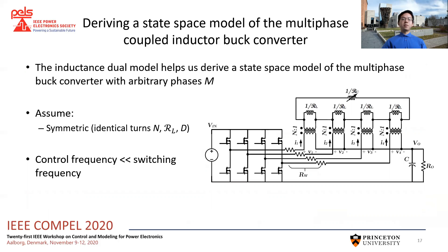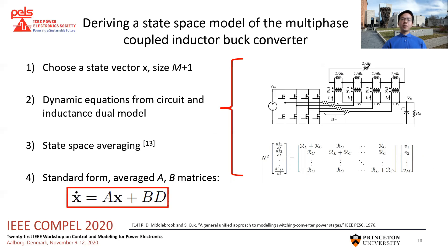Now that we've discussed some models and their strengths, we will leverage the inductance dual model to derive a state-space representation and the transfer function of the multi-phase coupled inductor buck converter. Here we have a schematic of a four-phase converter with the inductance dual model representing the coupled inductor. We consider a uniform winding resistance Rw and an output resistance R0. We assume a symmetric design — that is, having the same duty cycle, the same reluctance, and the same number of turns on every phase, though we could extend this analysis to an asymmetric design as well.